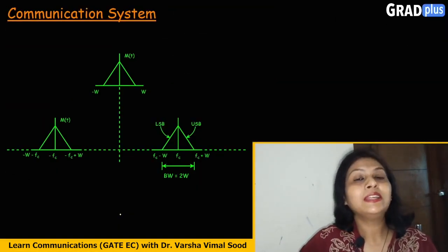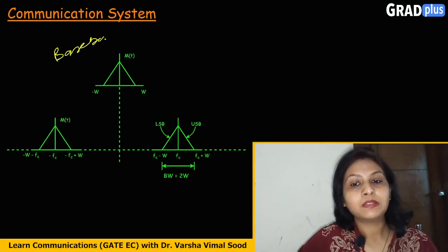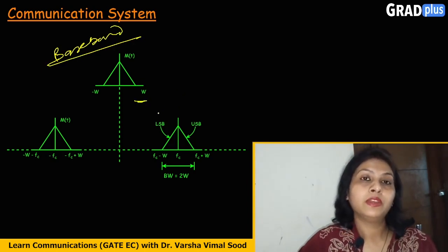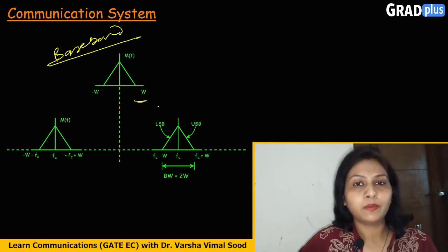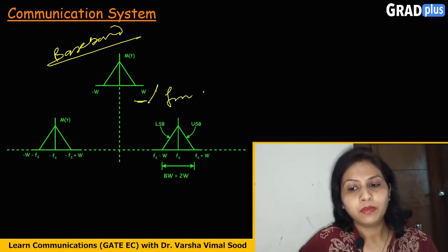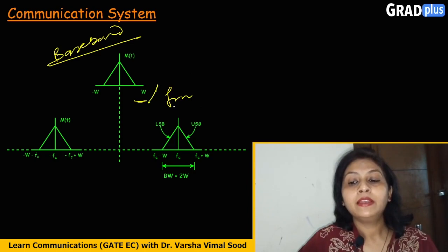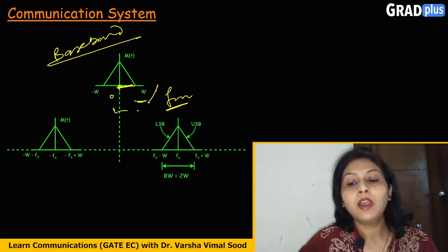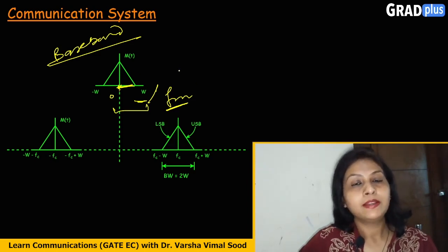Looking at the frequency domain representation, or the spectrum, of baseband and passband signals: in the case of baseband, we are dealing with a single frequency up to W or FM. The bandwidth of our message is FM, starting from 0, so 0 to FM is the band of the message signal — the bandwidth of the baseband signal.